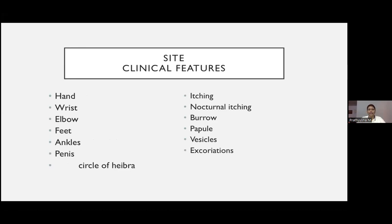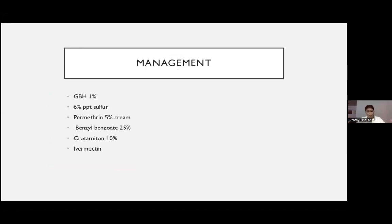Scabies is usually seen over the hands, wrists, elbows, feet, ankles, and penis — the circle of Hebra. Characteristic features are nocturnal itching with burrows, vesicles, and excoriations on examination. For management, available treatments include GBH (gamma benzene hexachloride), 6% precipitated sulfur, permethrin cream, benzyl benzoate, crotamiton, and ivermectin. In a busy OPD it is difficult to explain topical application, so I prescribe systemic ivermectin. For children less than 6 years use permethrin cream; above 6 years, ivermectin 6 mg stat dose repeated after 2 weeks; above 16 years, ivermectin 12 mg stat dose repeated after 2 weeks.